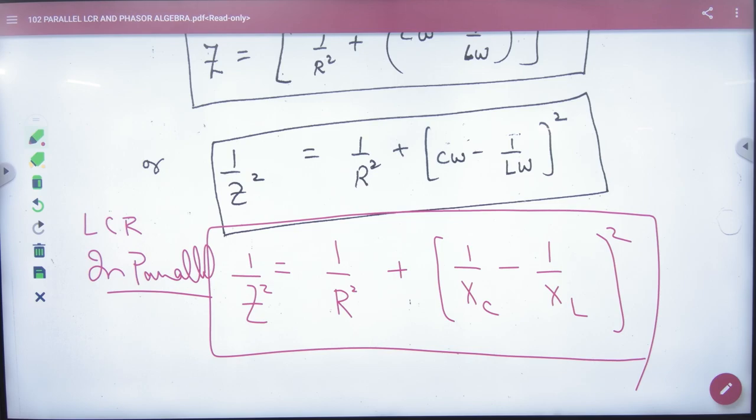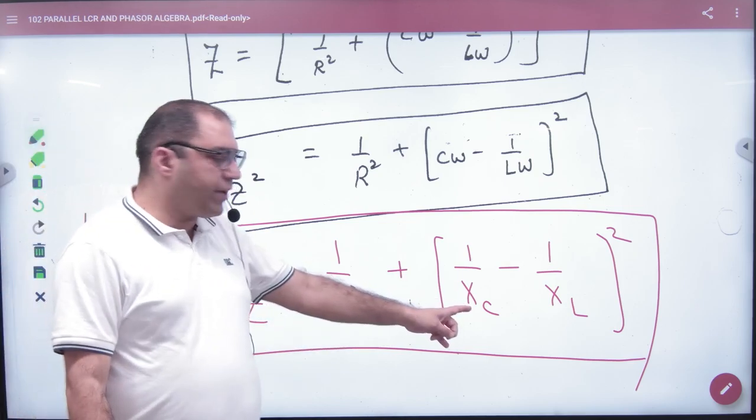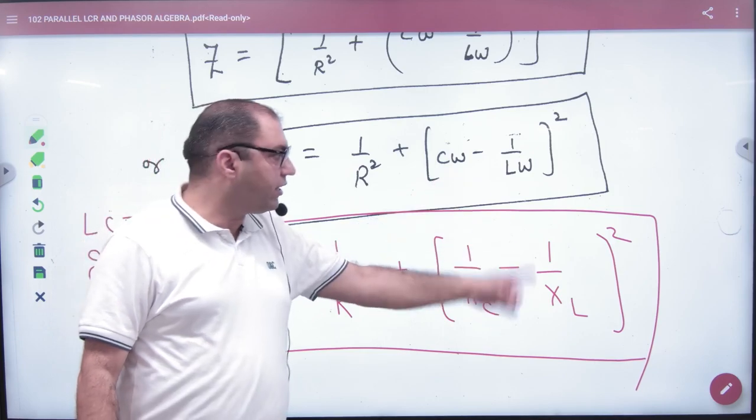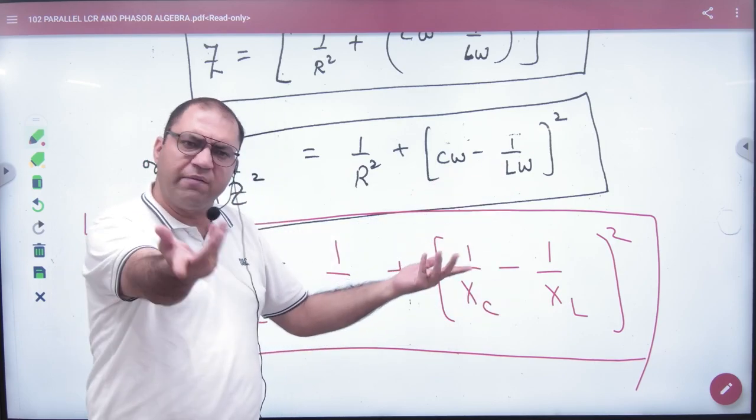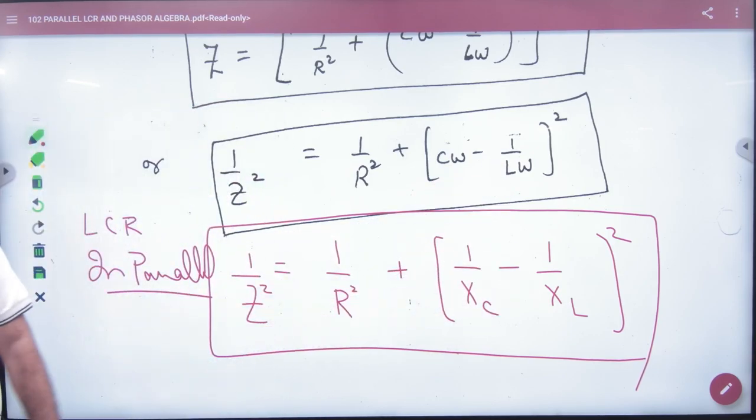Okay? The first formula. Impedance formula clear. For numerical values, put X_C = 1/(ωC) and X_L = ωL - they will do this in numerical problems. Remember that. First formula.